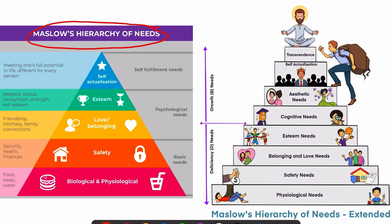In his first proposed theory, there were only 5 domains, which can be further classified into the basic or fundamental needs, the psychological needs related to the psychology, and the self-fulfillment needs which are going to satisfy the purpose of our life.